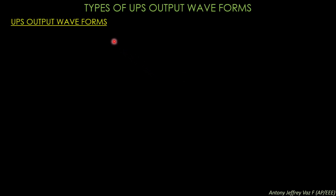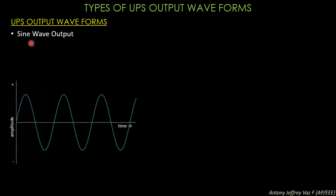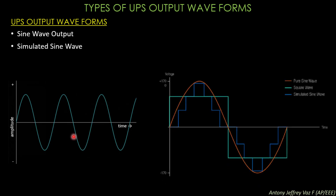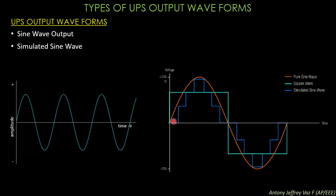Next we will look at UPS output waveforms. The basic output is a sine wave at power frequency. The other type is the simulated sine wave output — shown here as a blue line — which most older UPS produce. Modern UPS produce a perfect sine wave. The simulated sine wave produces harmonics, causing humming in fans and tube lights connected to older inverters, whereas modern sine wave inverters produce no such noise.